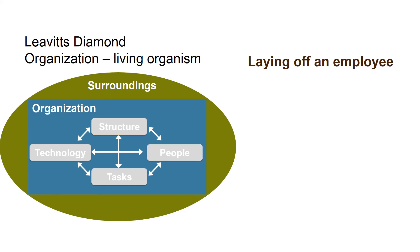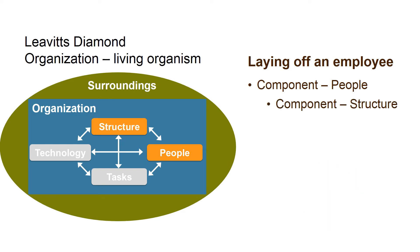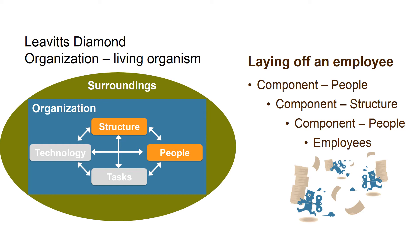Laying off an employee is certainly the component People. But then it becomes the component Structure, when tasks are distributed among fewer employees. And then we are back in the component People, as the remaining employees have to work harder.